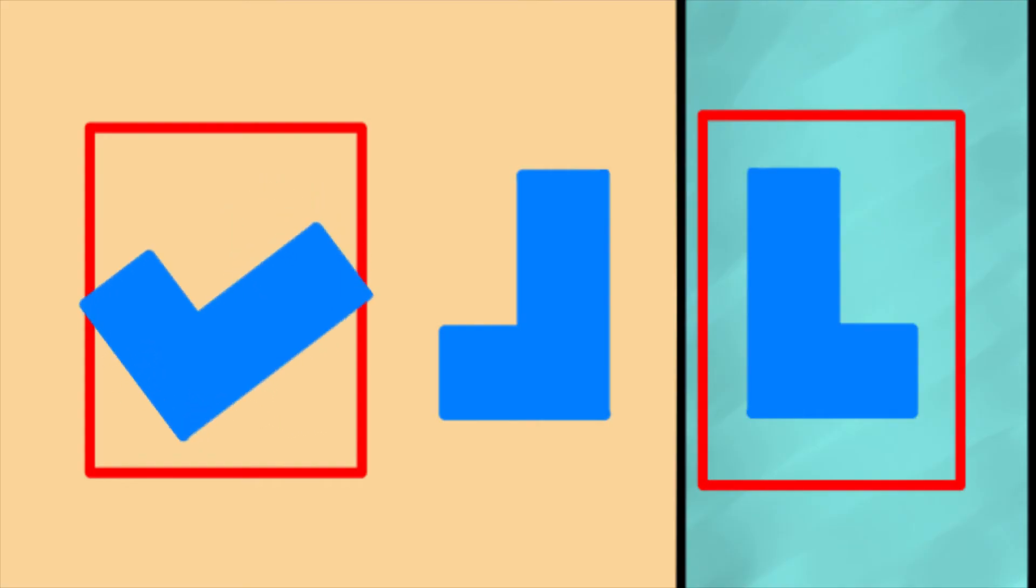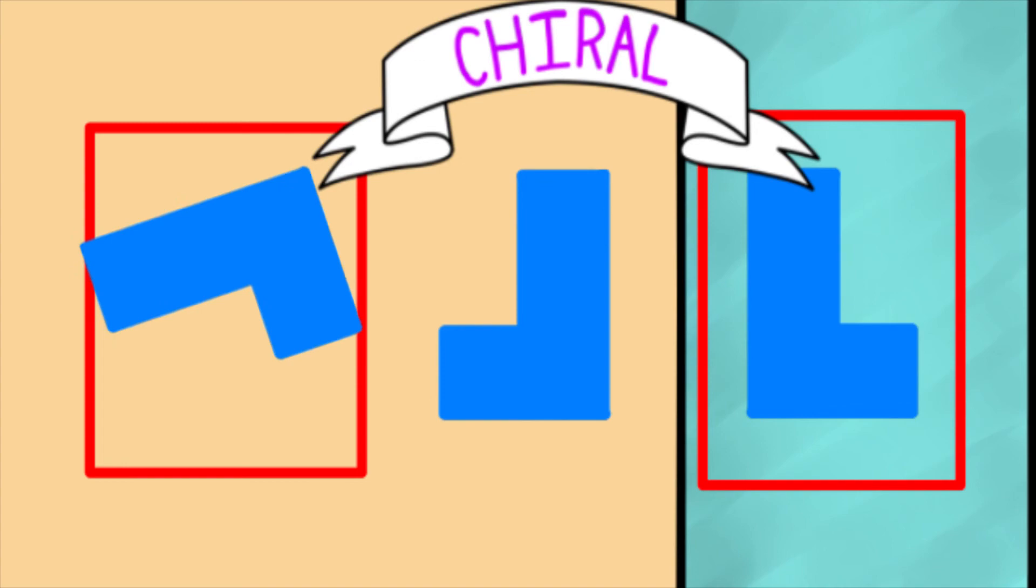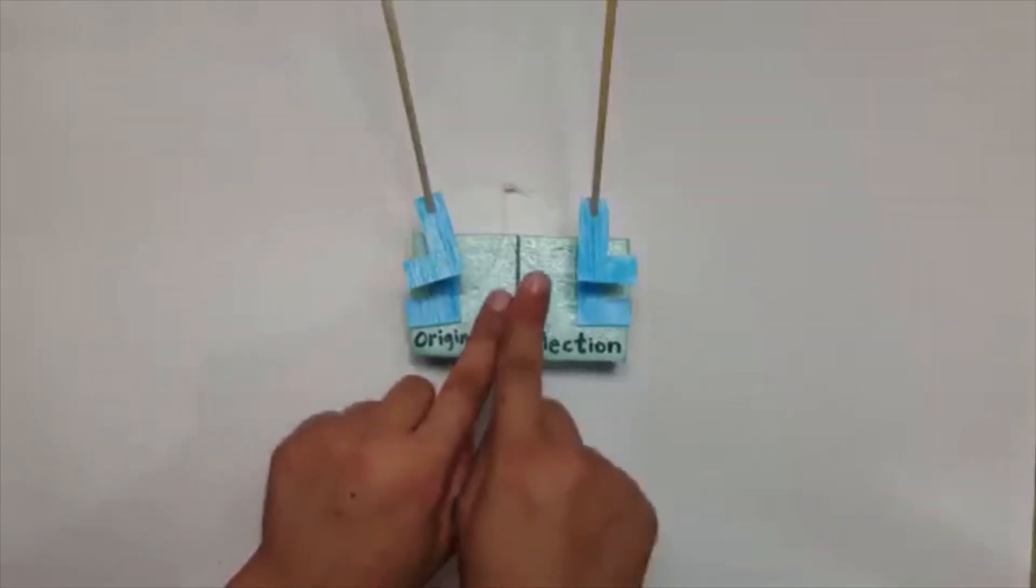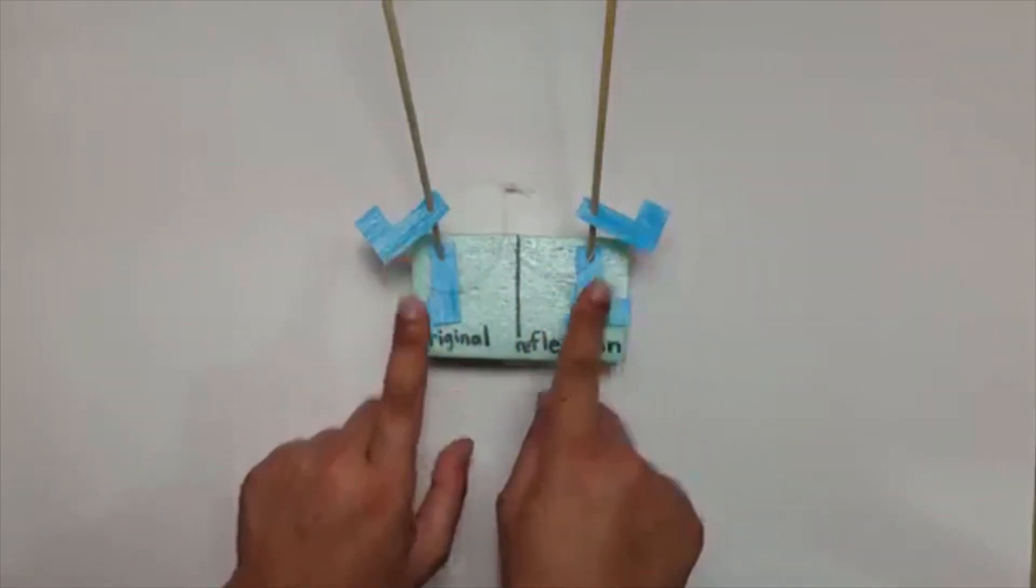Now to review, chirality is when you can't get the reflected shape by rotating the original object in any way. And metachirality is when you can't get the reflected object by performing the same set of transformations to both pieces.